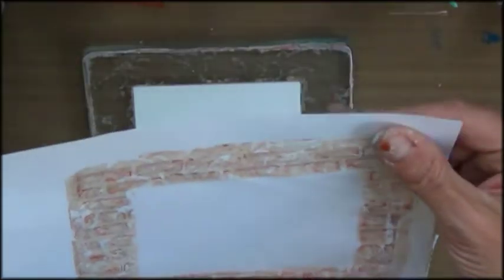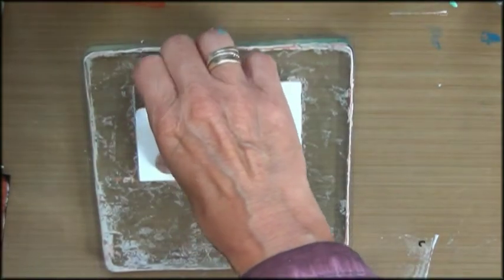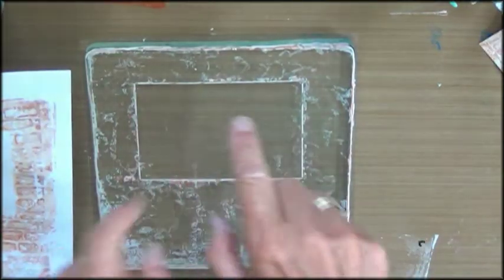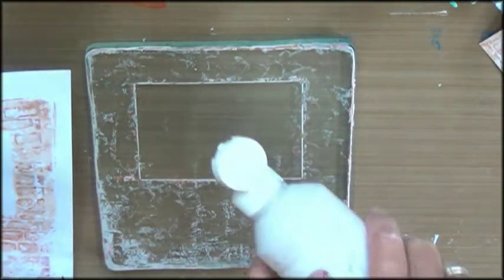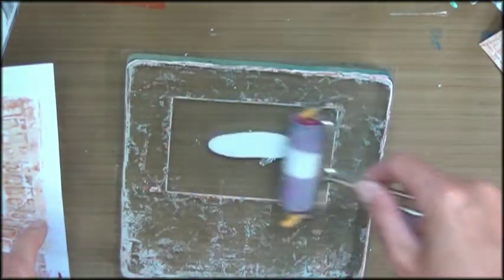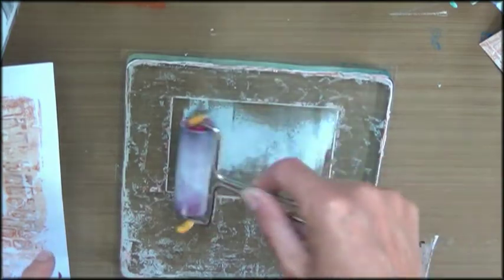And to achieve that, I cut out a rectangle and lay it onto the jelly plate before I take my print. And again, I rub pretty hard to get a good connection between the plate and the paper. Transferring all those gorgeous layers from the jelly plate onto my paper.